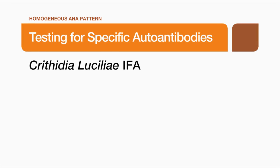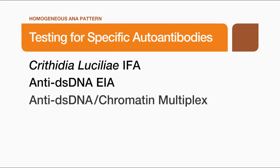The clinical associations of a homogeneous pattern are systemic lupus erythematosus or SLE and drug-induced lupus. In many cases, the doctor will order additional tests to see if the specific antibody or antibodies causing the positive ANA can be identified. Thanks for watching — please visit our YouTube channel and see other videos in the Autoimmunity IFA video series. Bio-Rad product information and contact info are in the comments below. Please let us know what you think and what topics you'd like to see in the future.